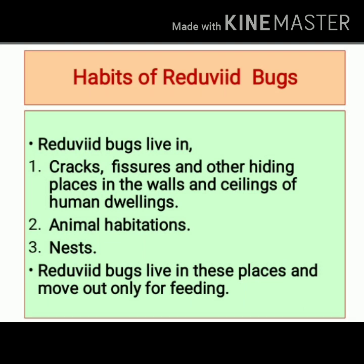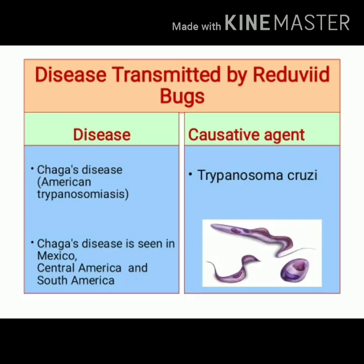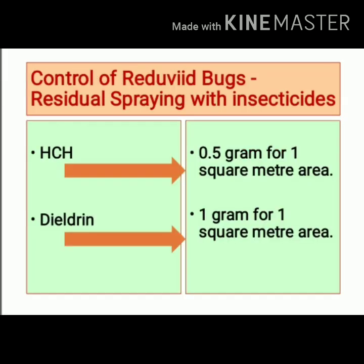The public health importance of Reduviid bugs is that they are involved in the transmission of Chagas disease, also known as American Trypanosomiasis. American Trypanosomiasis is caused by Trypanosoma cruzi and is seen in Mexico, Central America, and South America.